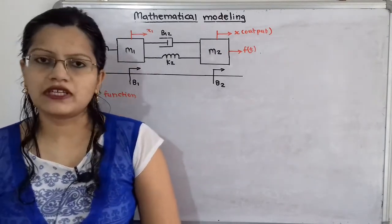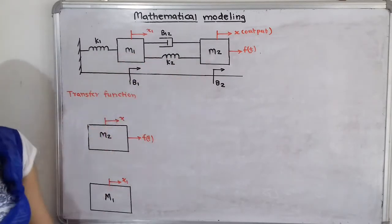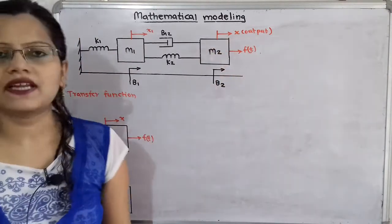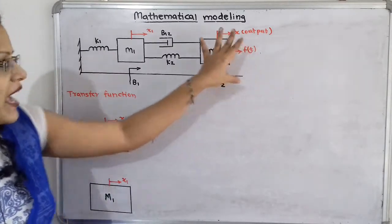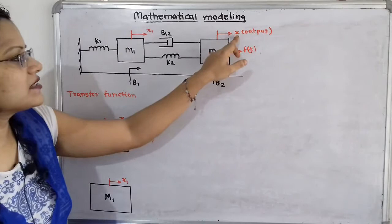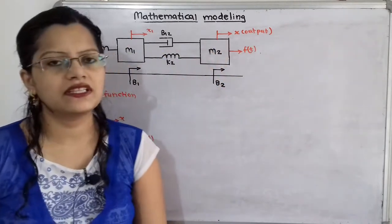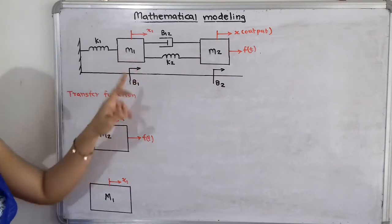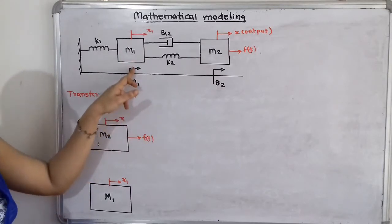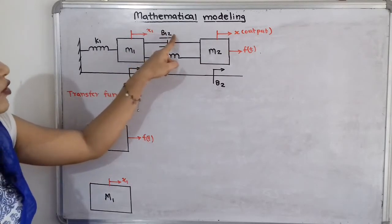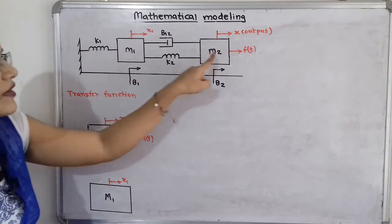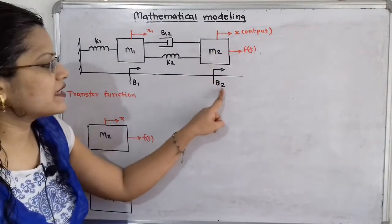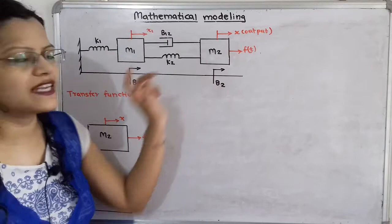Let us first observe what this system is. Mass M1 and mass M2 are present, where M1 has displacement X1 and M2 has displacement X. The applied force — the input — is F(T), and the output for this whole system is displacement X. Spring with stiffness K1 is attached to only mass M1. Viscous friction coefficient B1 is related to M1 only, while B12 is the damper between M1 and M2. Spring K2 is between M1 and M2, and viscous friction coefficient B2 is related to M2 only.